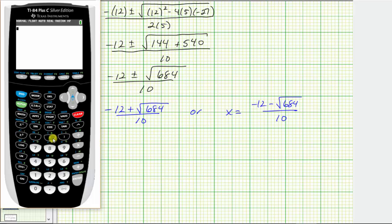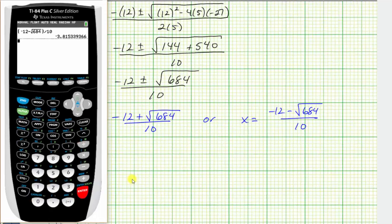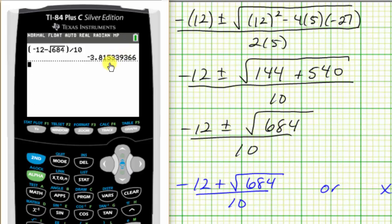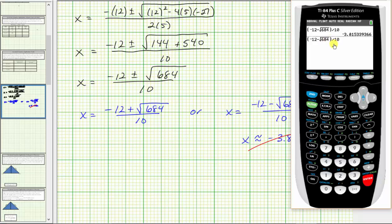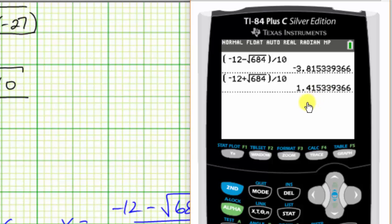We need parentheses around the numerator, so we start with an open parenthesis, then negative 12 minus the square root of 684, press the right arrow to get out from underneath the square root, close parenthesis, and then divide by 10. Rounding to the hundredths place value, notice there's a five in the thousandths place, which means we round up, so x is approximately negative 3.82. We exclude this value because x is a length and must be positive. Now let's determine the other value: pressing second, enter gives the previous entry, which we edit by changing the minus to plus, then press enter. To the hundredths place value, x is approximately 1.42.